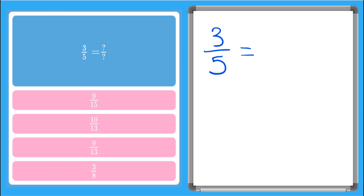So looking at our possible answers here, this one here has a 10 in the numerator. But there's nothing that we can multiply this 3 by to get 10, so we know that that can't be an answer. And this one has a 3 in the numerator. But if we multiplied the numerator by 1, then we'd also have to multiply our denominator by 1, and that would give us 3 fifths, not 3 eighths. So we know that one can't be it.